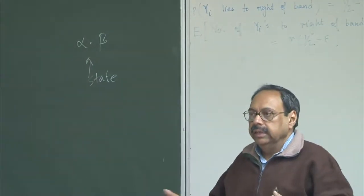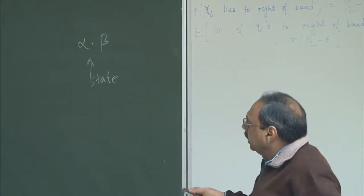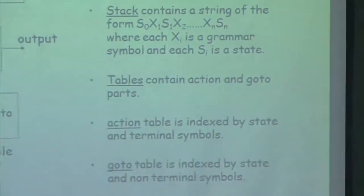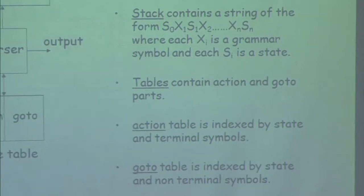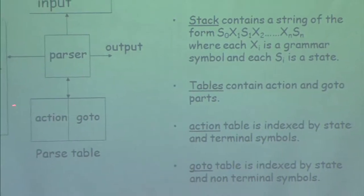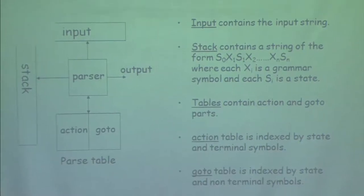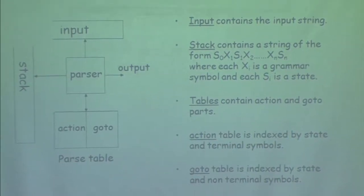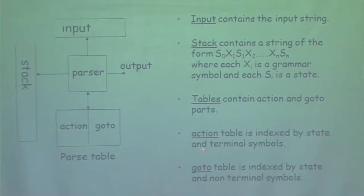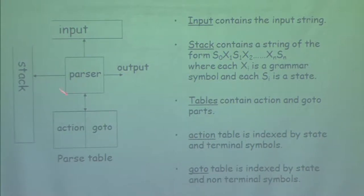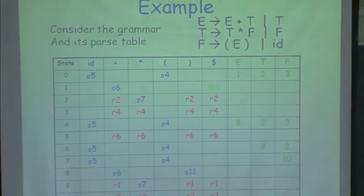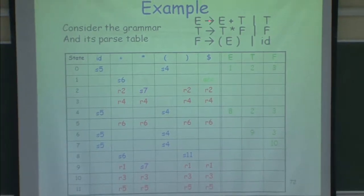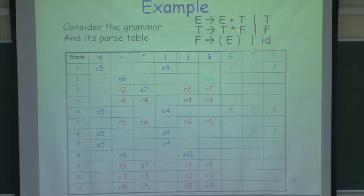The parse table has two parts: an action part indexed by state numbers and terminal symbols, and a goto part indexed by states and non-terminal symbols. Let me show an example. Here is a parse table for a left-recursive expression grammar: E goes to E plus T or T; T goes to T star F or F; F goes to bracket-expression or id. This grammar has 12 states, numbered 0 to 12.